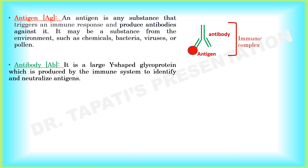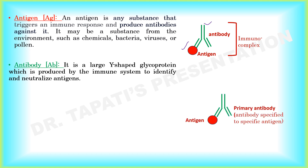An antibody is a large Y-shaped glycoprotein which is produced by the immune system to identify and neutralize the antigen. A primary antibody is the antibody specific to a specific antigen, whereas a secondary antibody is the antibody specific to the primary antibody. So in this case, the primary antibody is actually acting as the antigen for the secondary antibody.